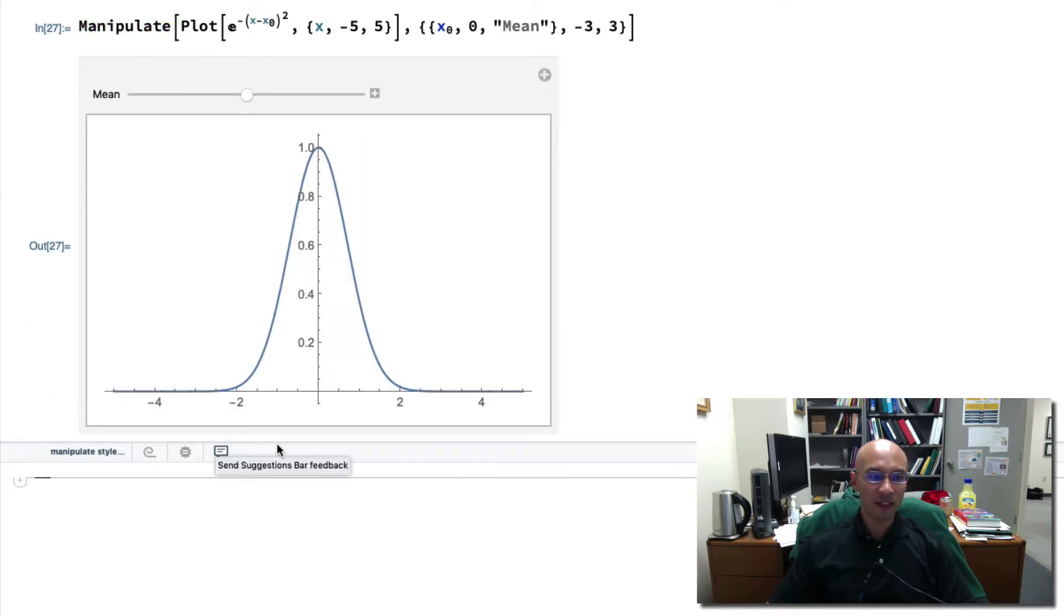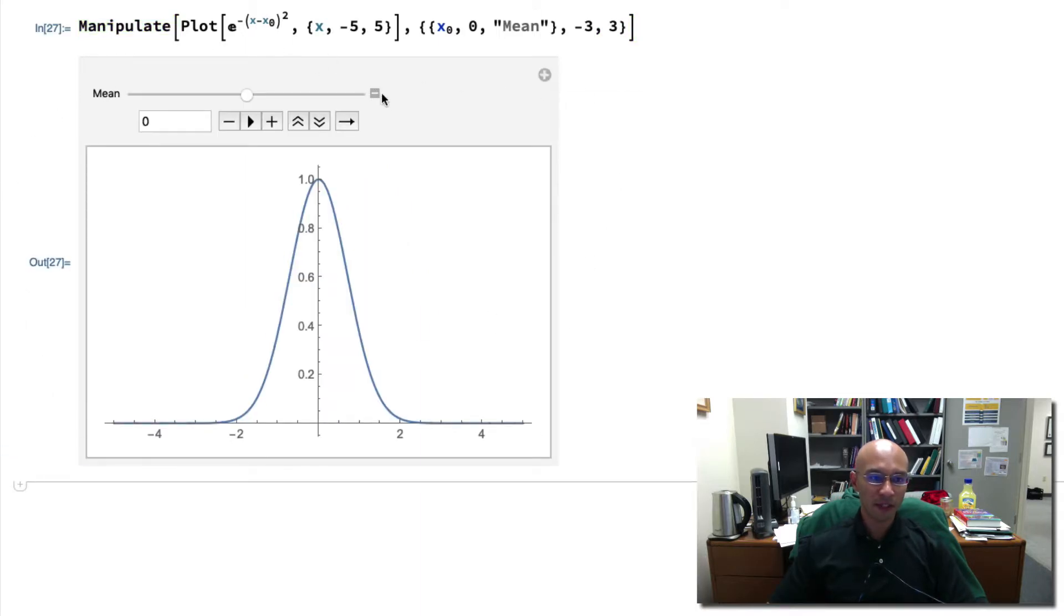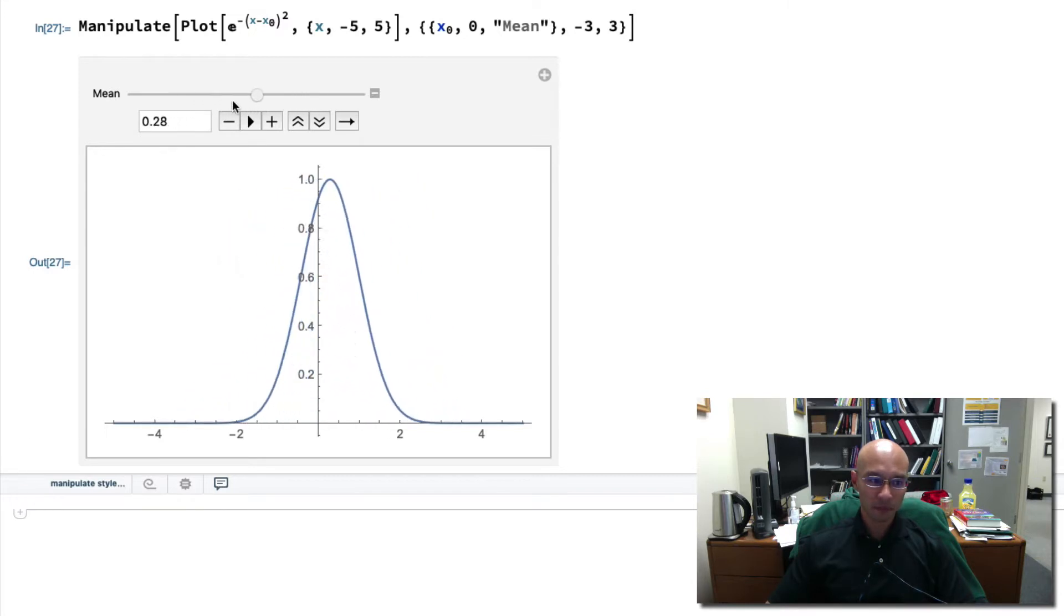Manipulate gives me this nice little window here. And so if I click this plus minus button, it shows me the actual value of the mean here. I can control it using the slider, and you can see as the slider shifts, the mean shifts.